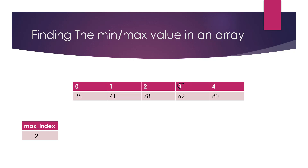We go to location 3 and check: is 62 greater than 78, the element at location 2? 62 is not greater than 78, so we do not change the maximum index. The maximum element is still at location 2.